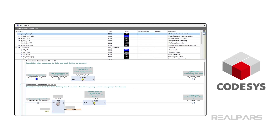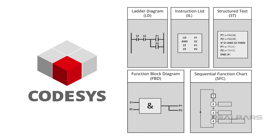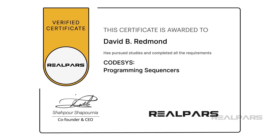By the end of the course, you will be comfortable with creating simple PLC programs to control sequential processes on your own, and be ready to take more advanced programming courses about other aspects of Codesys, like writing programs using the structured text, function block diagram, and sequential function chart programming languages. Upon completion of the course, you will receive a certificate from RealPars.